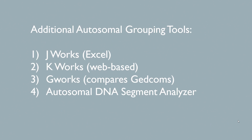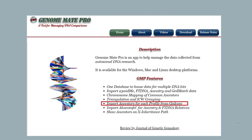One of the things that was confusing for me when I first started using this program is when I realized it is actually more than one program. There are utilities that enable you to create spreadsheets. J-Works does this in conjunction with an Excel spreadsheet. K-Works is a web-based spreadsheet tool. K-Works also compares GEDcoms that have been uploaded to the program. My favorite utility is the autosomal DNA segment analyzer, and that's what we're going to mainly focus on tonight.